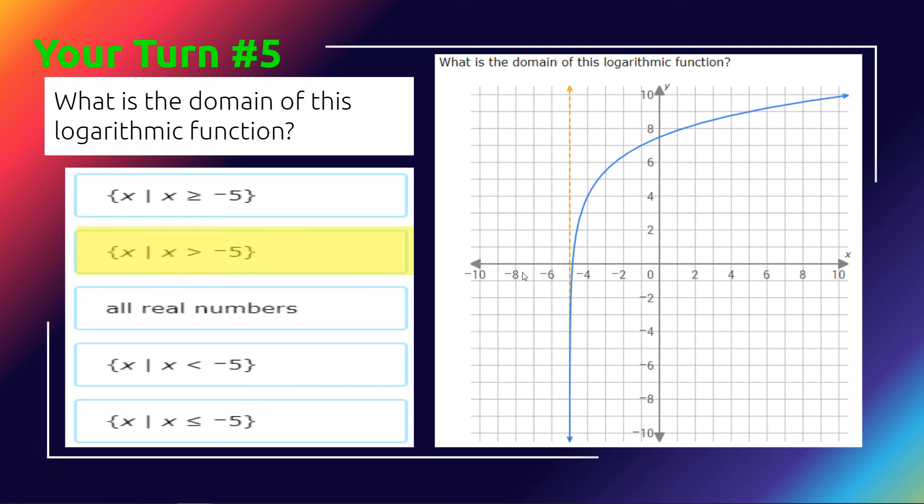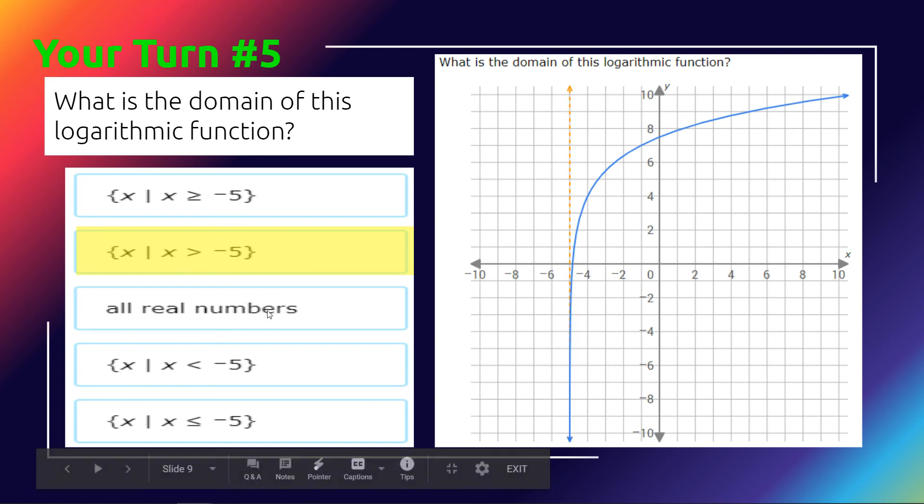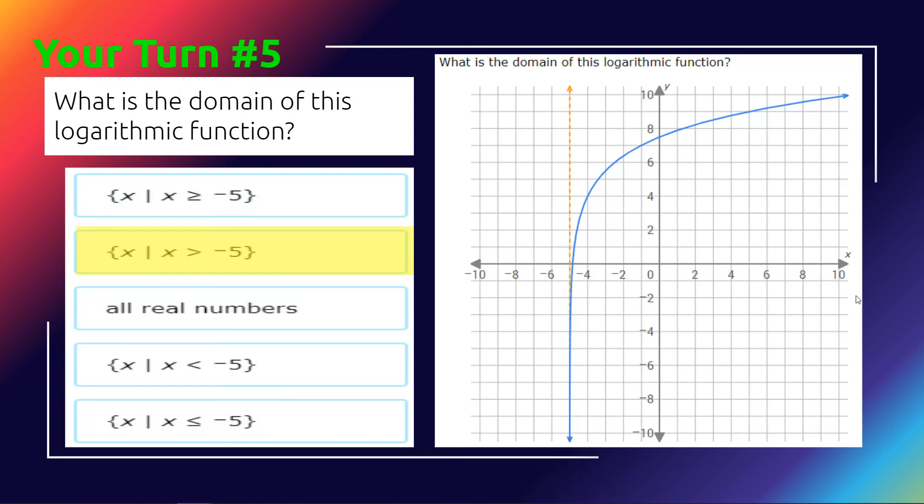We're coming all the way across until we get to negative 5, where we see a wall that tells us our domain. And it is not equal to negative 5 because notice it's a dotted line, which means it is not included.